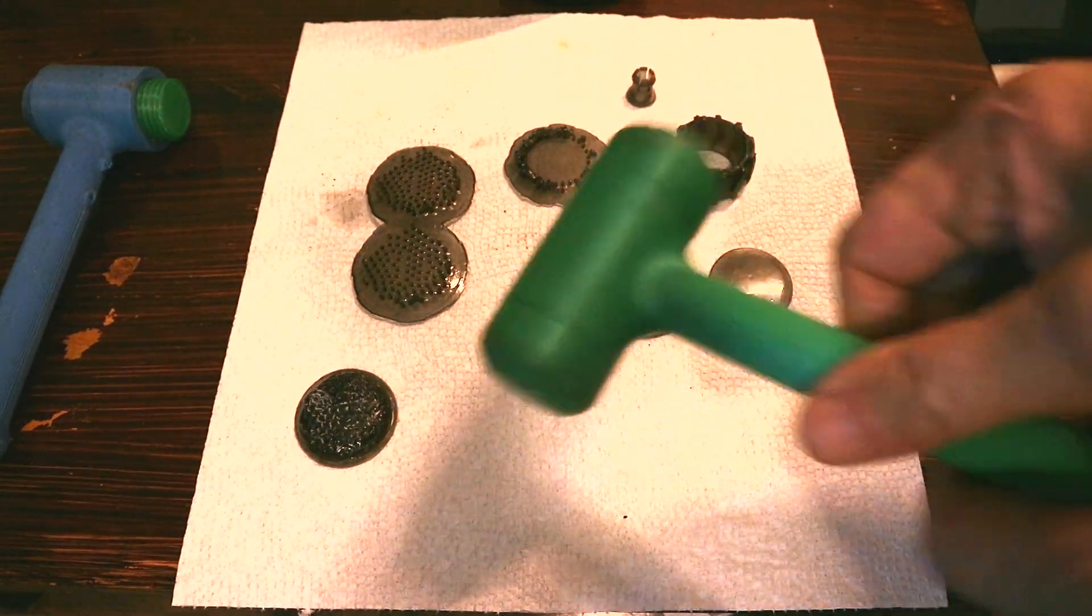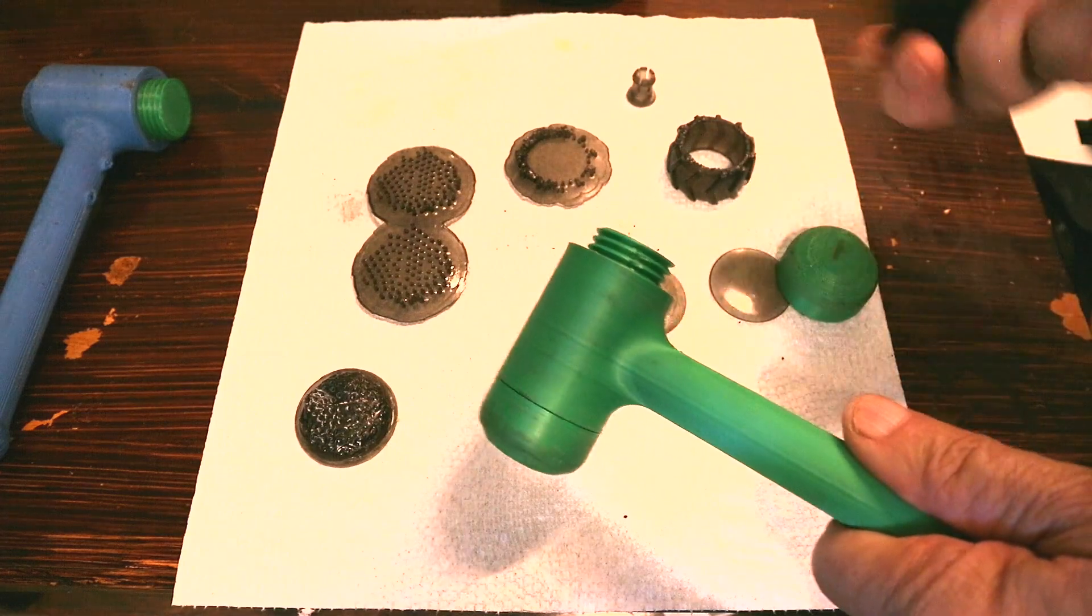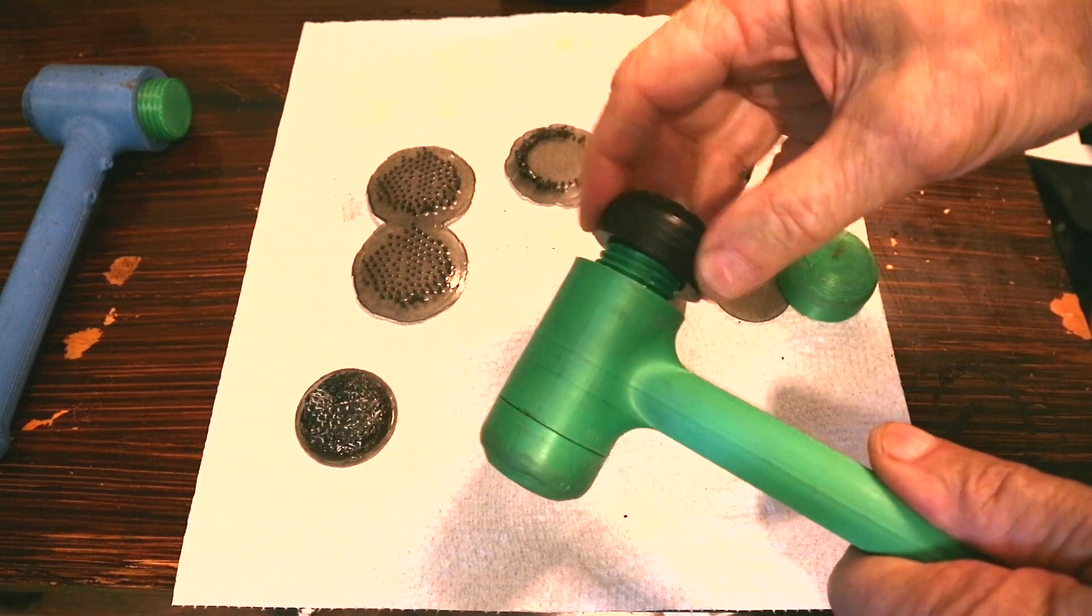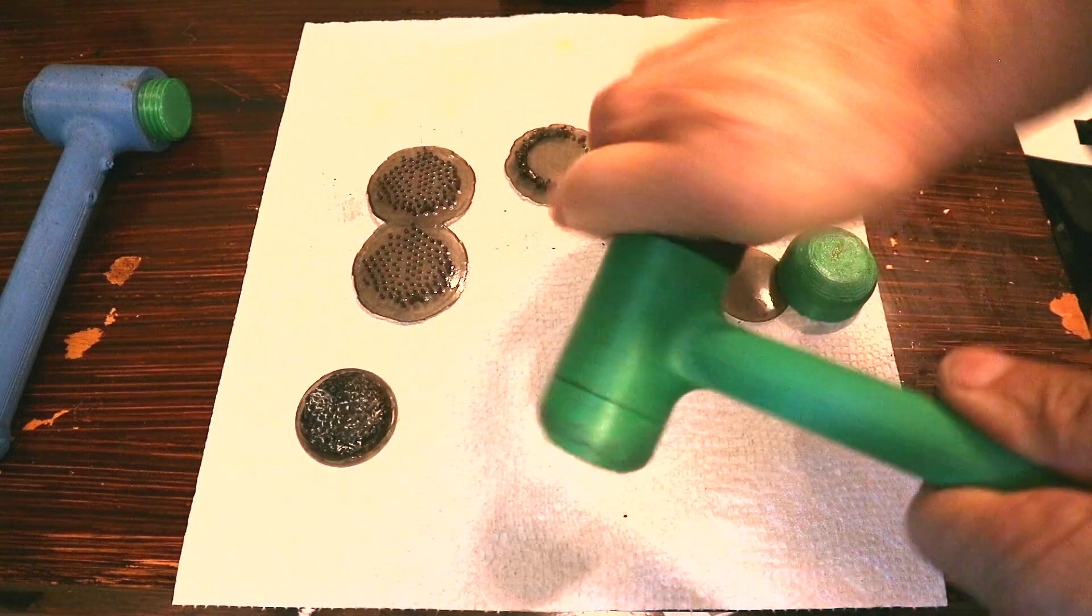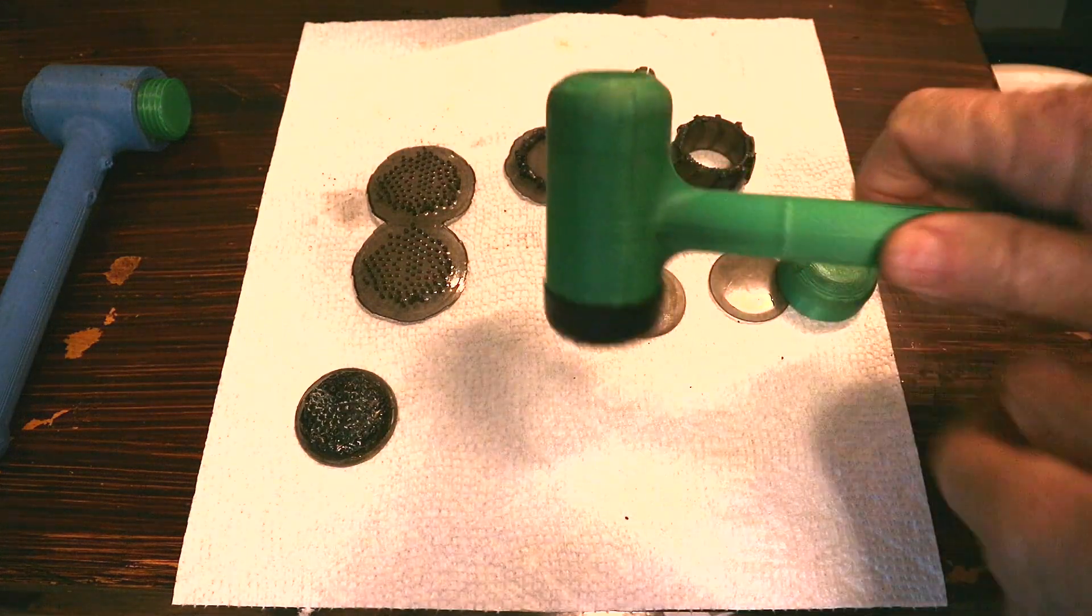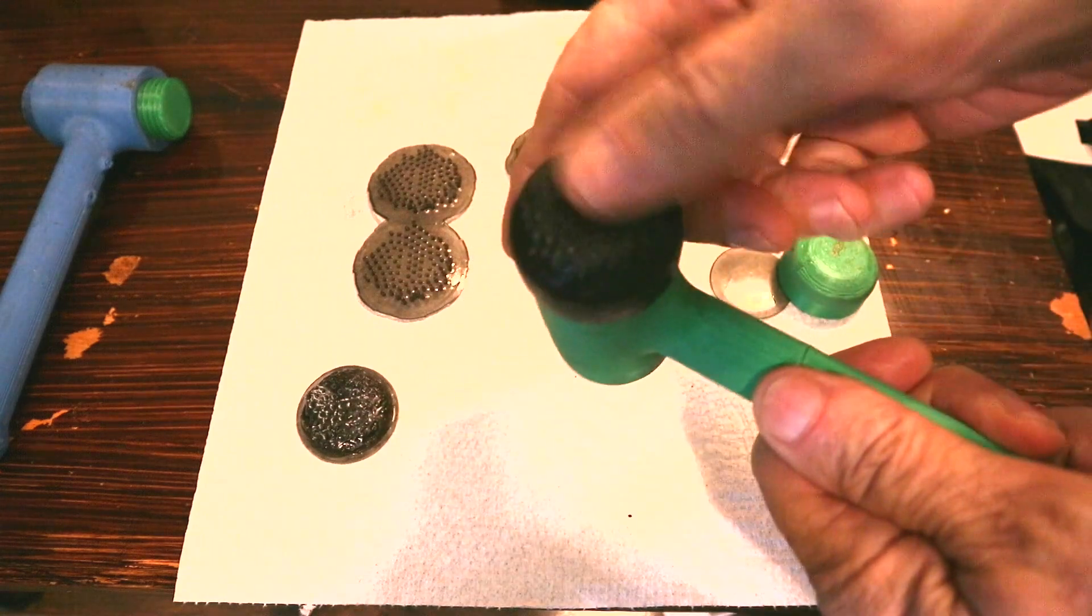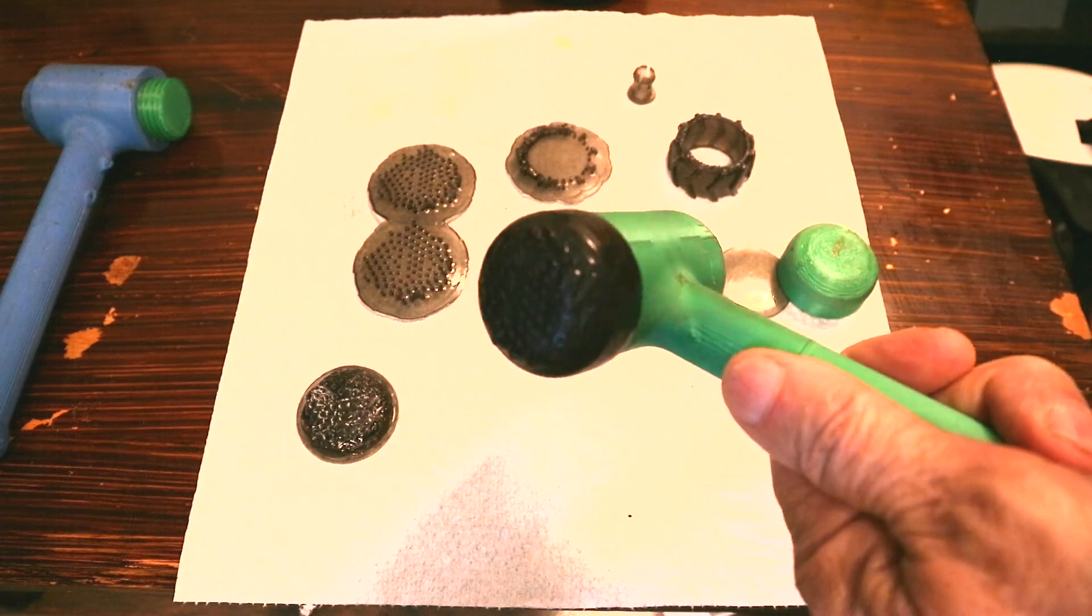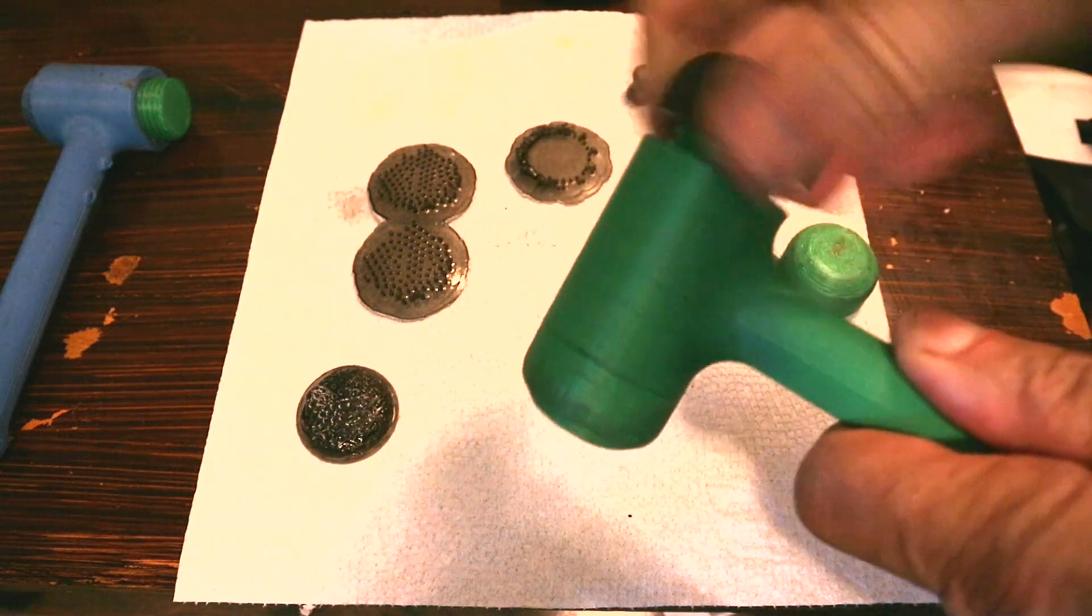And on the hammer, I printed it 2% oversized because I assumed it would probably shrink a bit. And there we go. So it fits on my hammer. And it gives me a kind of a less marring, if you discount where all the supports were, a less marring type of surface.